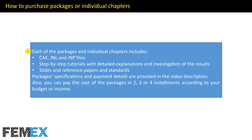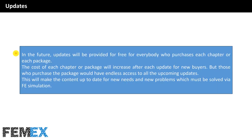How to purchase packages or individual chapters: each package and individual chapter includes CAE, JNL, and INP files, step-by-step tutorials with detailed explanations and investigation of results, and slides, reference papers, and standards. Package specifications and payment details are provided in the video description. You can also pay in two, three, or four installments according to your budget. Future updates will be provided free of charge to all purchasers, while the price will increase for new buyers after each update.